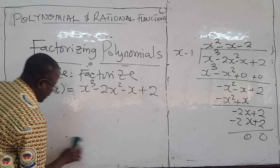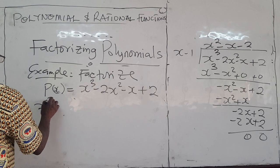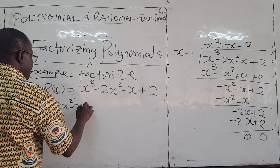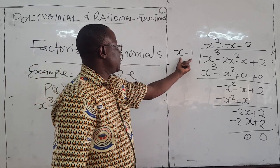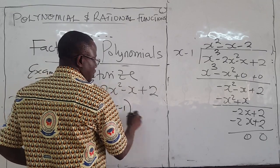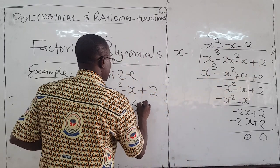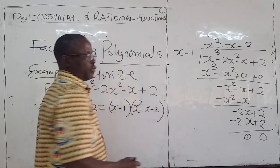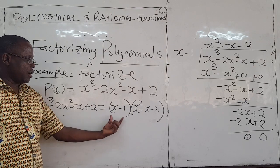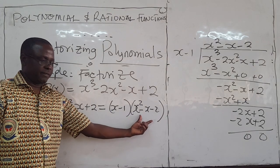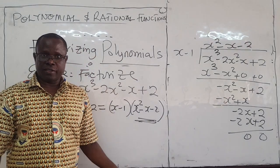This means that x cubed minus 2x squared minus x plus 2 can be written as a product. We have one factor already: x minus 1. And because there is no remainder, the quotient x squared minus x minus 2 gives us the remaining factors. We are not done yet — we can write this as x minus 1 times x squared minus x minus 2, then factorize the quadratic.